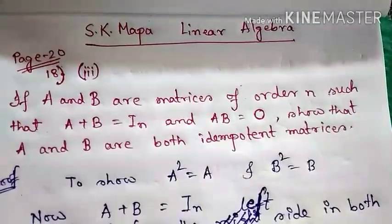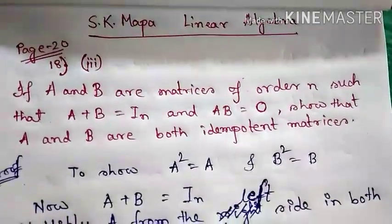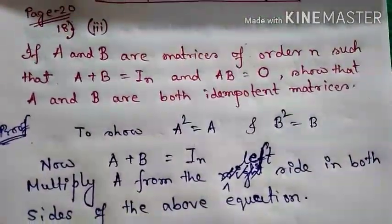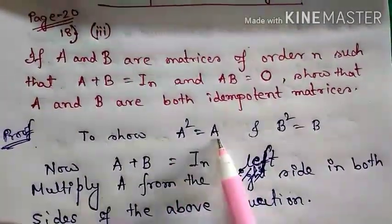We have to show that A and B are idempotent matrices, meaning we need to show that A² = A and B² = B.